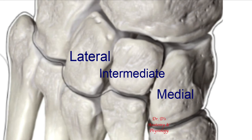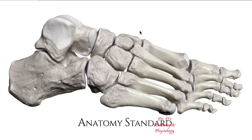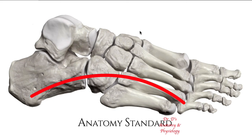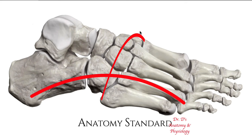Here again is a lateral view of the foot, which on the lateral side displays a longitudinal arch. There is another longitudinal arch on the medial side which is higher. The cuneiforms contribute to a transverse arch. So these are the arches of the foot: a lateral and medial longitudinal arch, and a transverse arch.